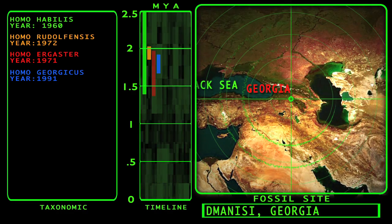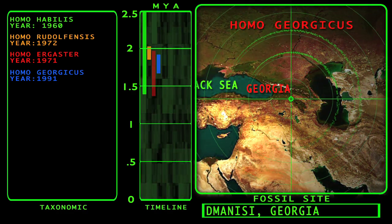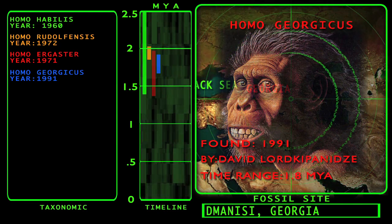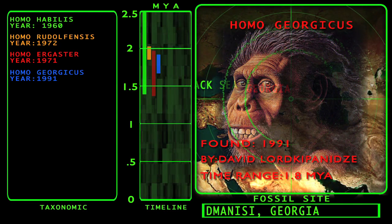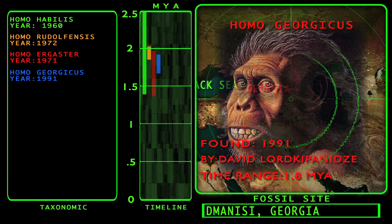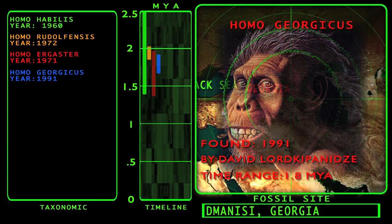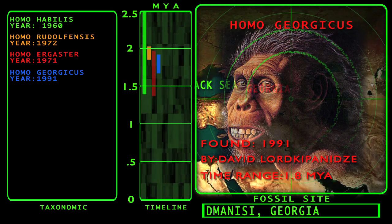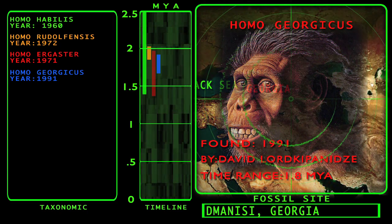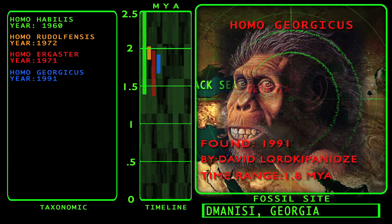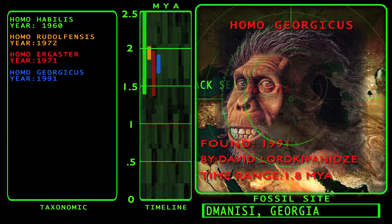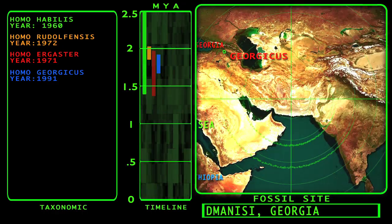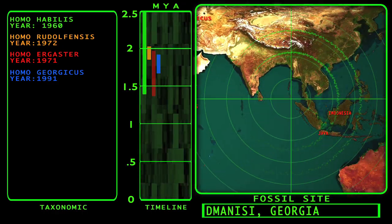Next on our timeline, we encounter Homo georgicus. The fossil remains of Homo georgicus were discovered in 1991 by paleoanthropologist David Lordkipanidze in Dmanisi, Georgia. The fossils were first thought to belong to Homo ergaster. In 2002, the fossils were assigned to the new species Homo georgicus, dated to about 1.8 million years in the past. This important find clearly demonstrates that members of the genus Homo had migrated out of Africa by 1.8 million years ago.